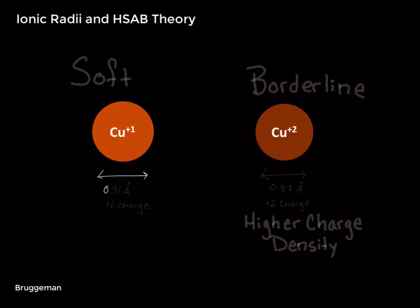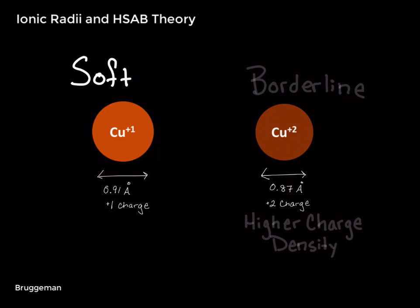The ionic size of each copper ion is compared here side by side. Copper 1 has a larger ionic radius than copper 2. According to the hard-soft acid-base theory, the radius and charge affects the softness of a metal such that copper 1 with its larger ionic radius is a soft acid and copper 2, which has a smaller ionic radius, is defined as borderline.